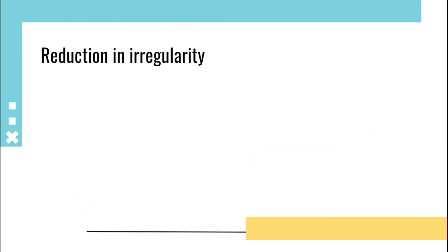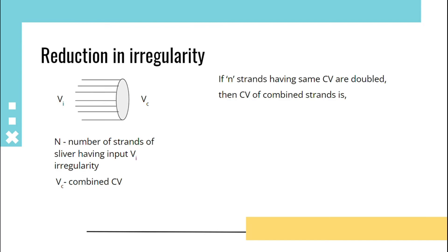Reduction in irregularity: Consider N strands of sliver having input V_i irregularity. When combined, the CV will be V_c. If N strands having the same CV are doubled, then the CV of combined strands is represented by CV of double strand = CV of individual strands/√N, that is V_c = V_i/√N.